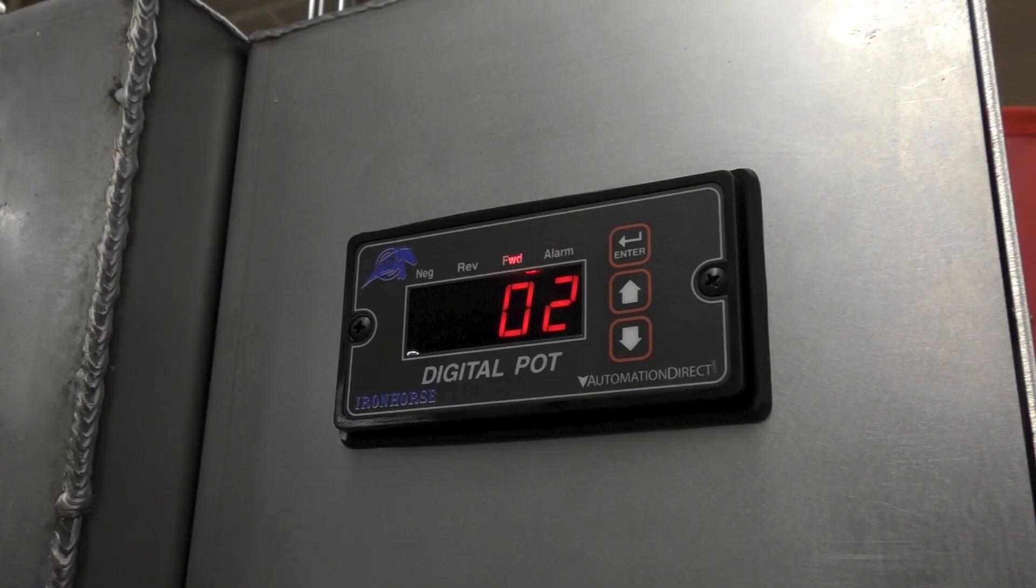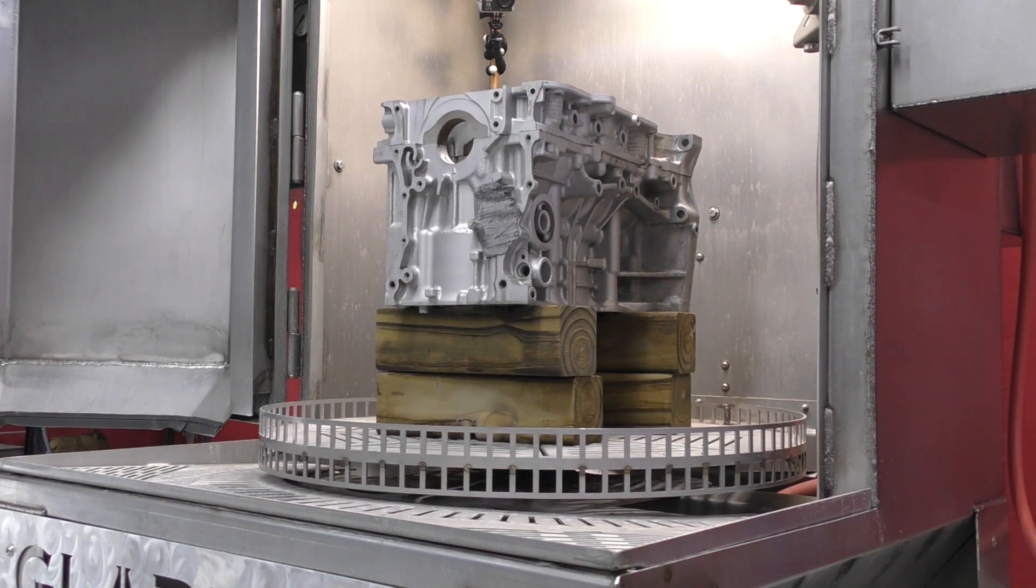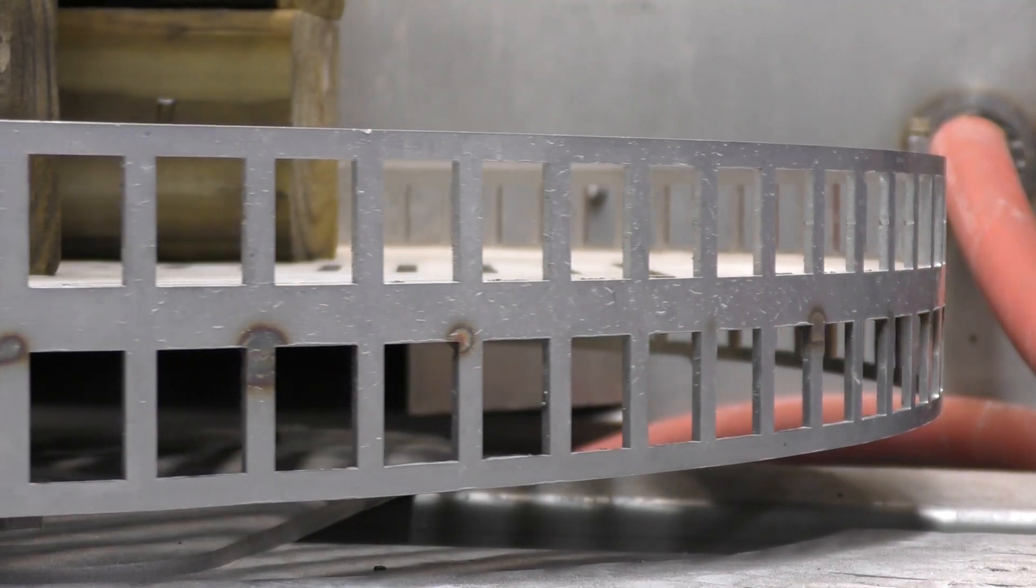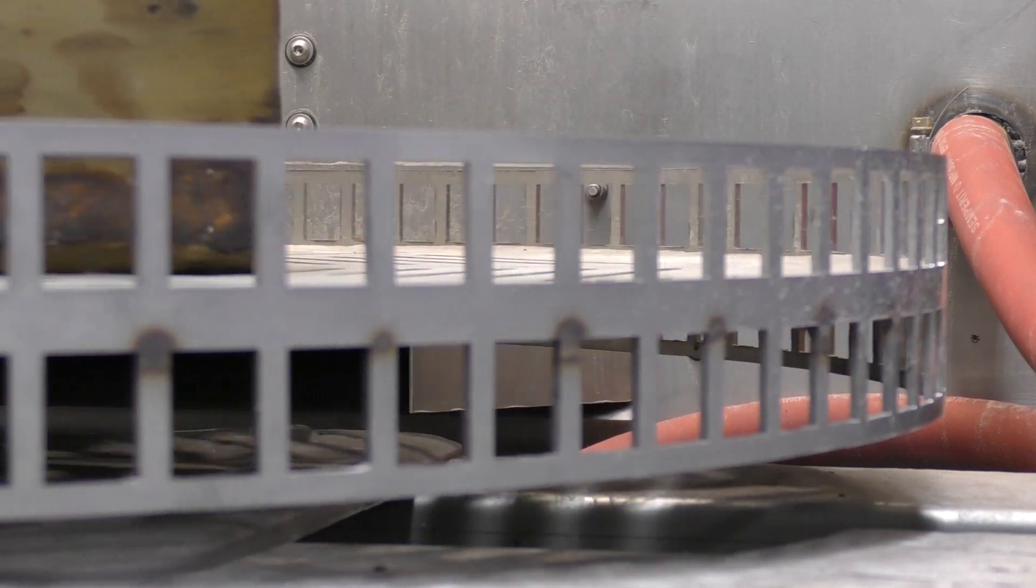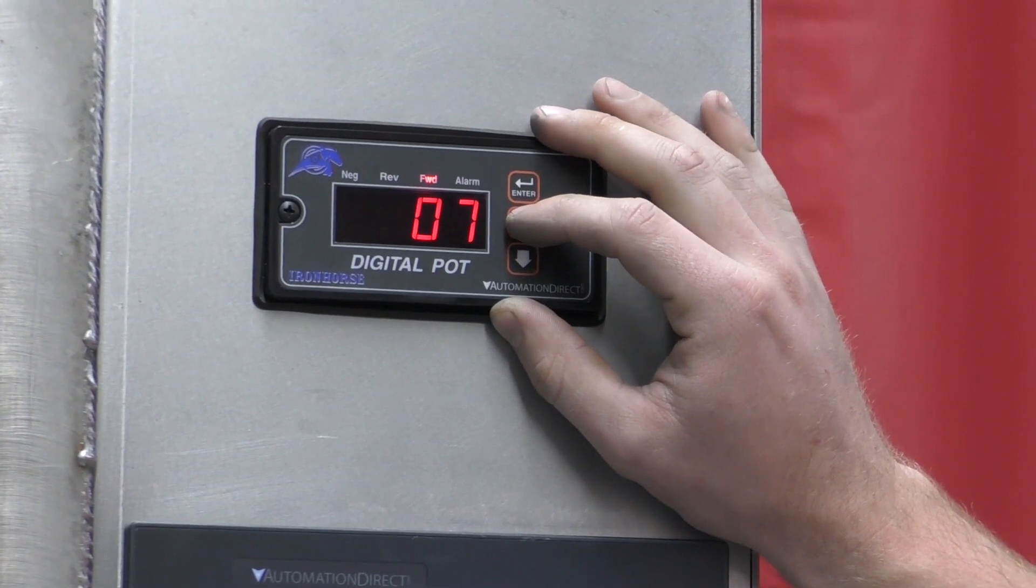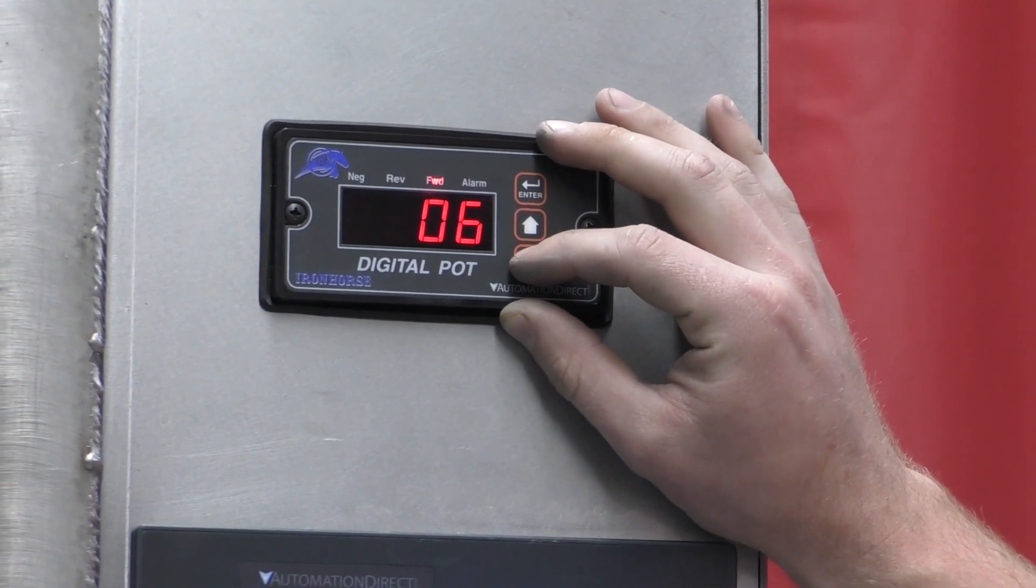For this version we have a digital potentiometer to accurately control the gear motor that spins the turntable. So we can get an accurate representation of what our turntable speed is on this machine. And to adjust, you just hit the button for up, you hit the down button to decrease the speed.